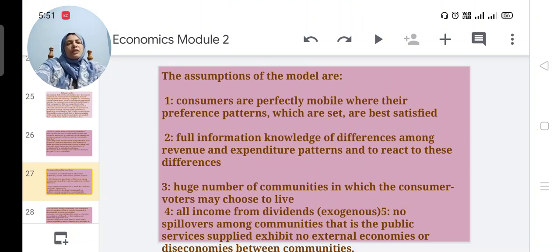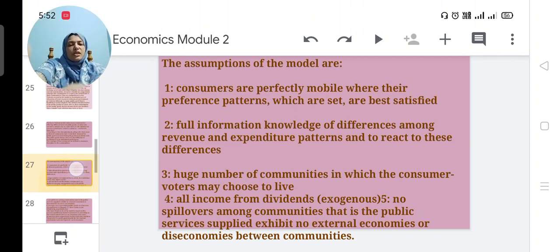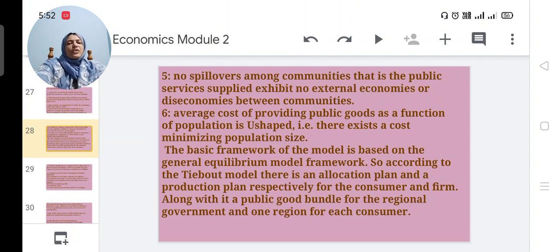The concept of voting with their feet can be utilized to maintain discipline in the communities. The assumptions of the model are: consumers are perfectly mobile wherever preference patterns are best satisfied. Second assumption is full information: knowledge of differences among revenue and expenditure patterns and to react to these differences. Third assumption is a huge number of communities in which consumer voters may choose to live. Fourth assumption is all income from dividends, that is exogenous. Fifth is no spillovers. Externality factors among the communities, that is public services supplied, exhibit no external economies or diseconomies between the communities.